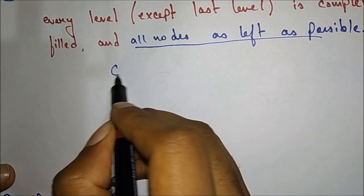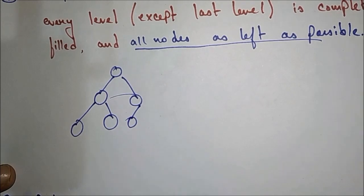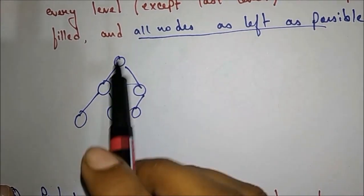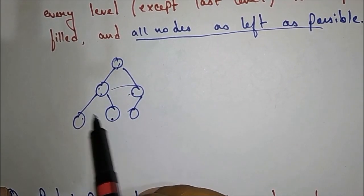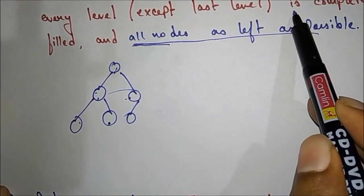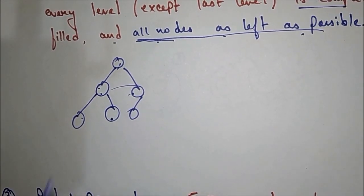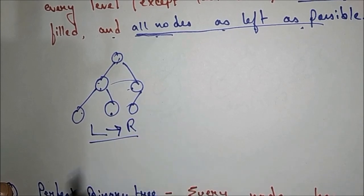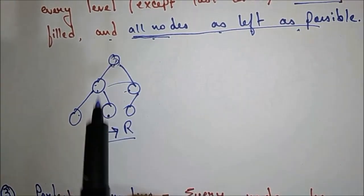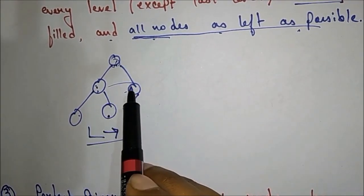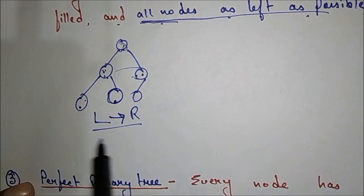For example, this is one complete binary tree. All nodes are completely filled — this node has two children, this node is also completely filled. When we fill nodes we follow left to right order, meaning for any node we fill the left node first then the right node.